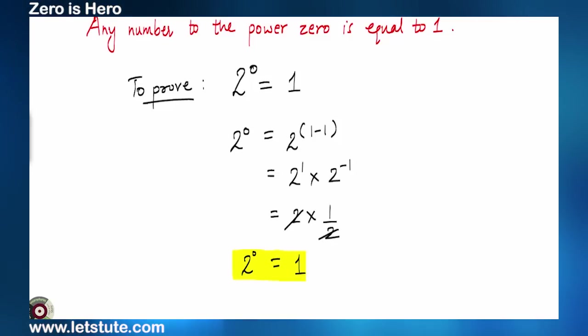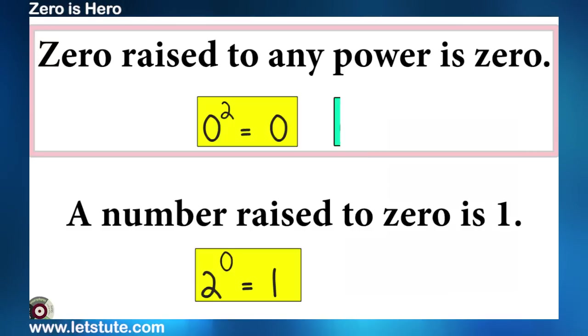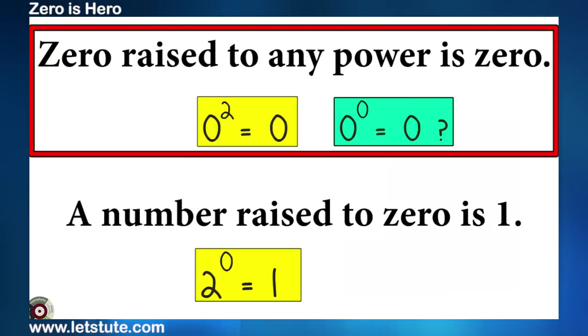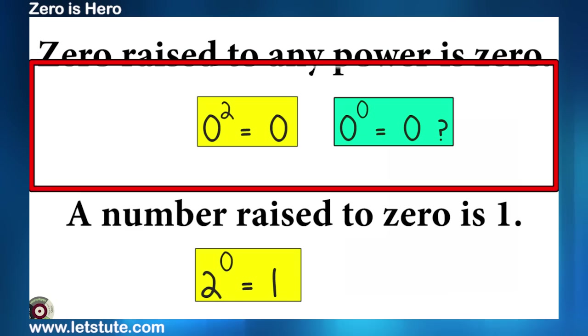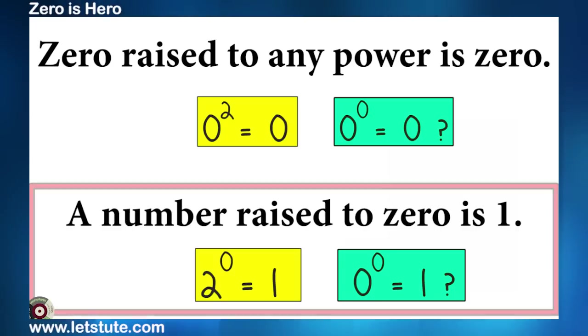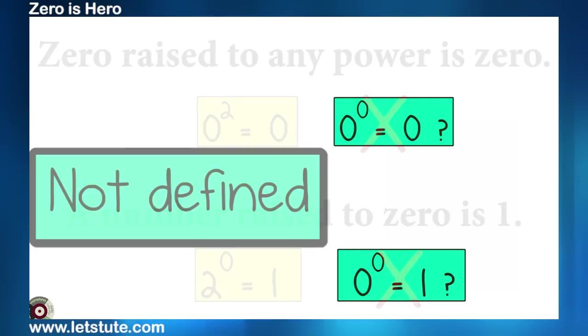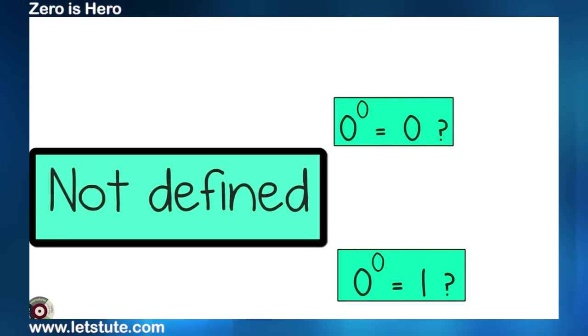So, just now we saw two things. So, with these two facts, what I'm thinking is if 0 raised to a number is 0 then 0 raised to 0 should also be 0. But, a number raised to 0 is 1. So, 0 to the power 0 should be 1. Well, both can't be true at the same time. Thus, 0 to the power 0 is not yet defined. Let's see why.